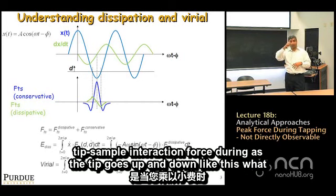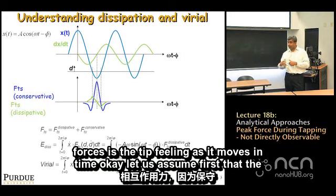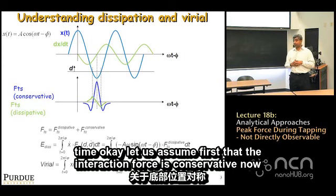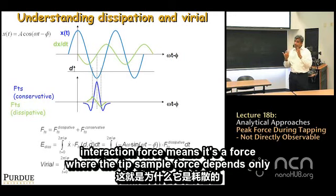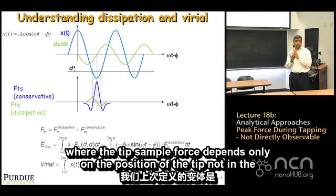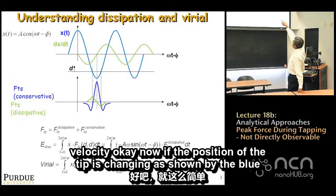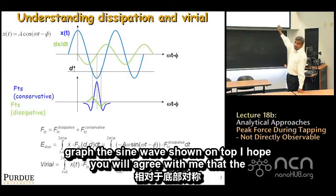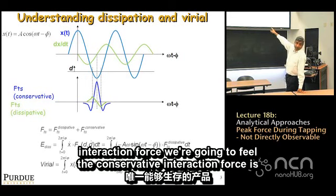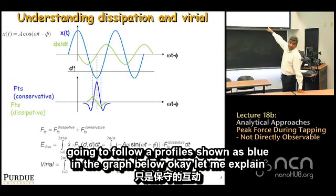Let's look at the history of tip-sample interaction force during an oscillation. If the interaction force is conservative — meaning it depends only on position, not velocity — then as the tip approaches, it first experiences an attractive van der Waals force, shown as the blue curve dipping negative. As contact occurs, the interaction becomes repulsive and the blue curve rises.